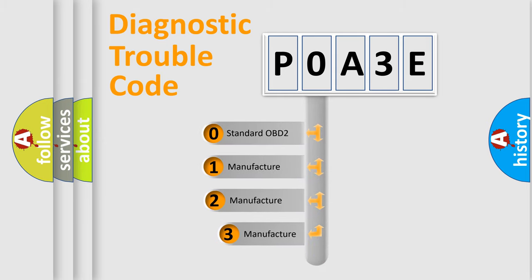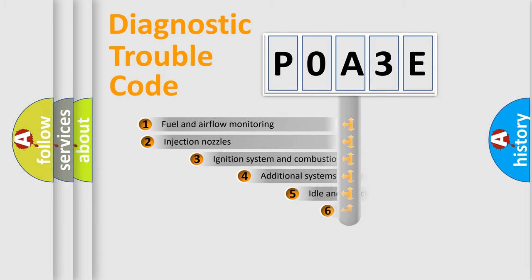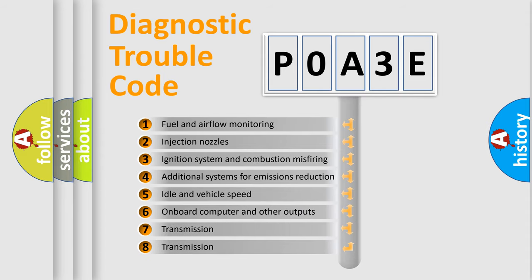If the second character is expressed as zero, it is a standardized error. In the case of numbers 1, 2, 3, it is a manufacturer-specific expression of the car-specific error.